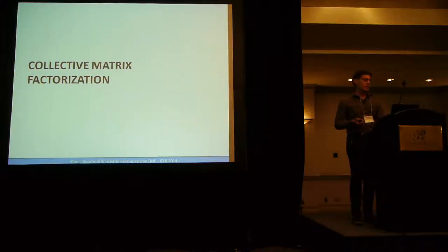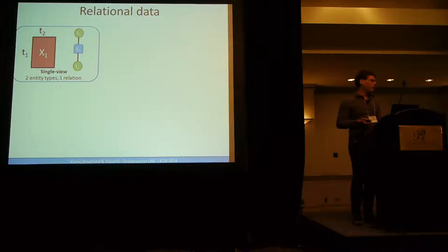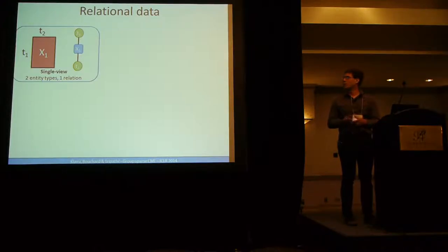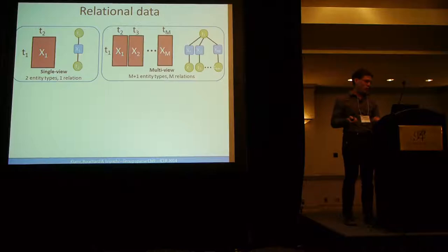So collective matrix factorization starts with a simple matrix. When you have a simple matrix, this is a relation. It's a single view. You have two entity types, the row entity types and the column entity types. You can represent this schema using this small graphical model here.